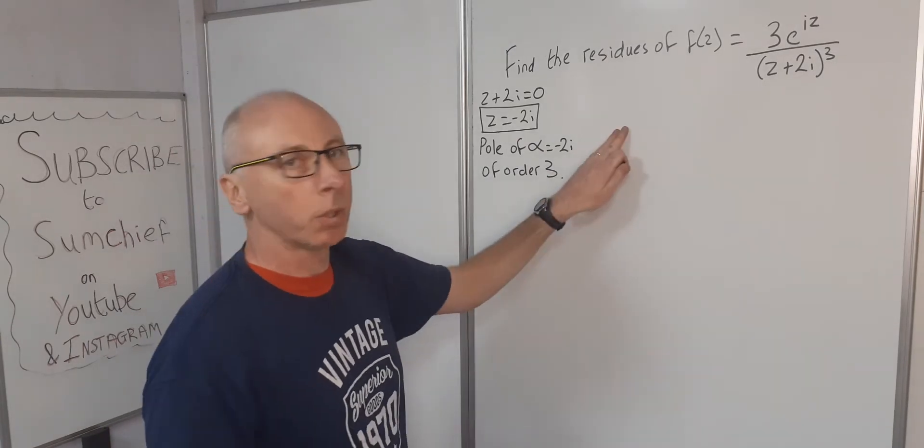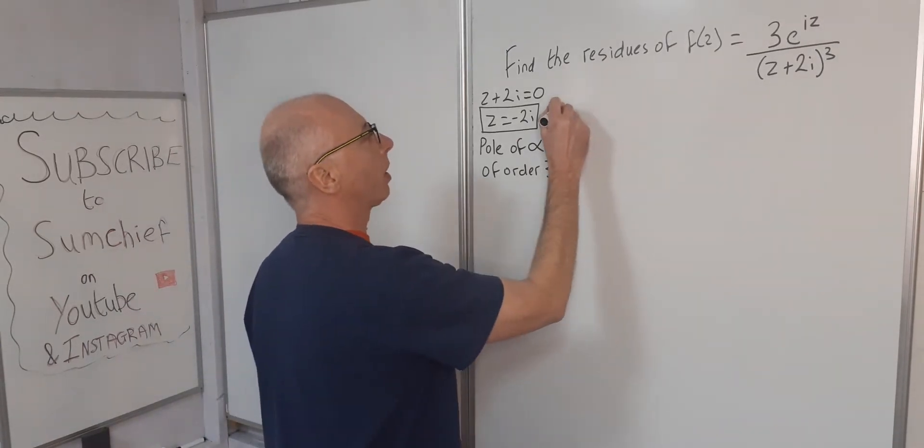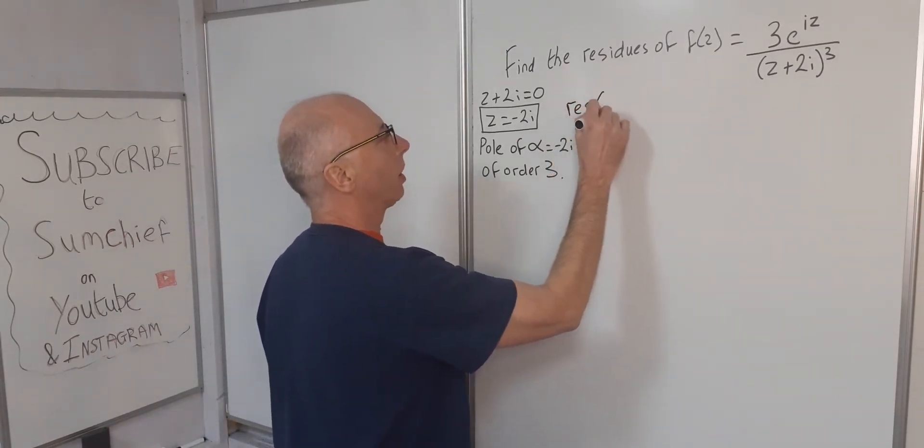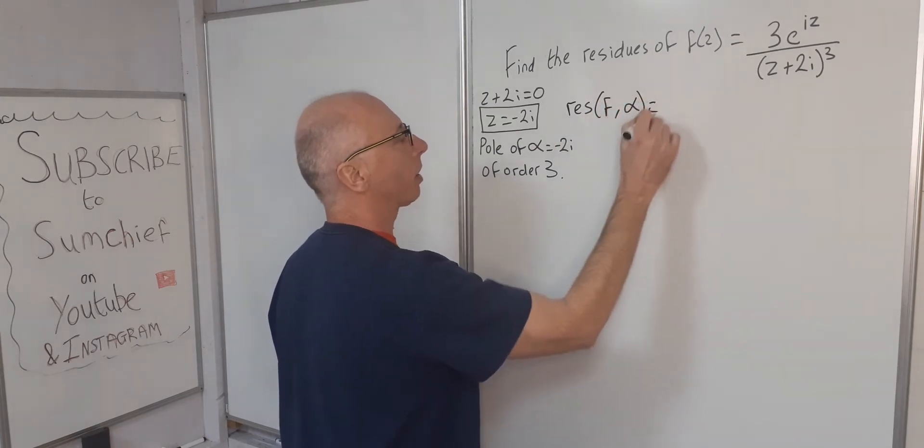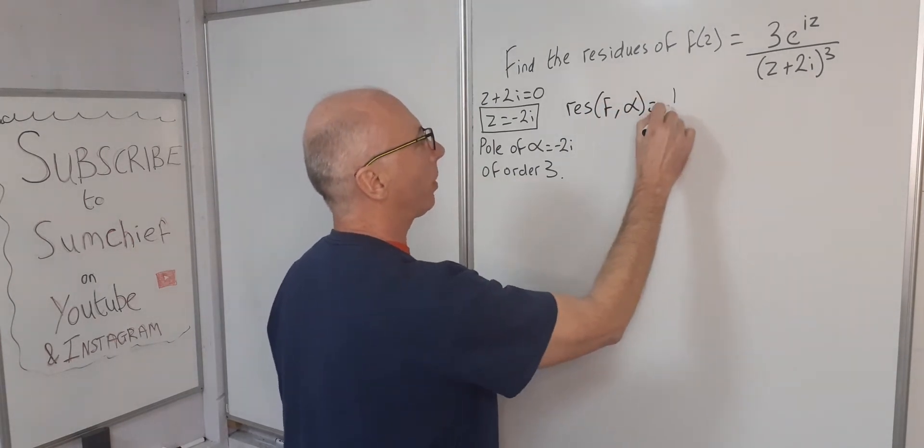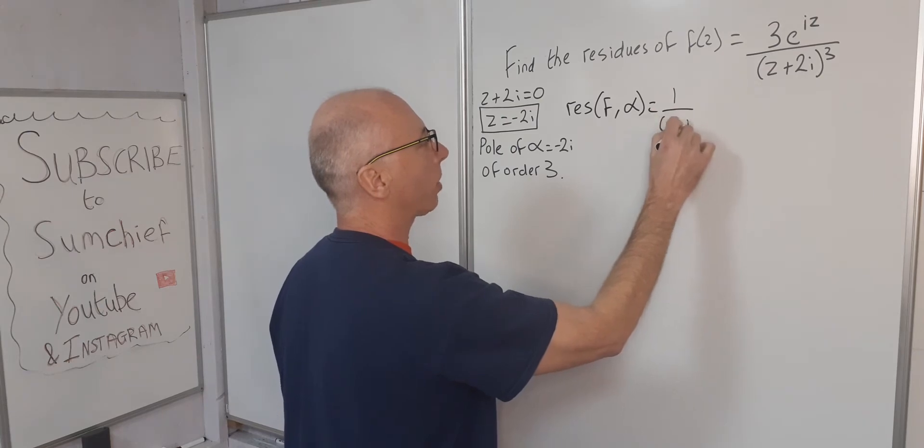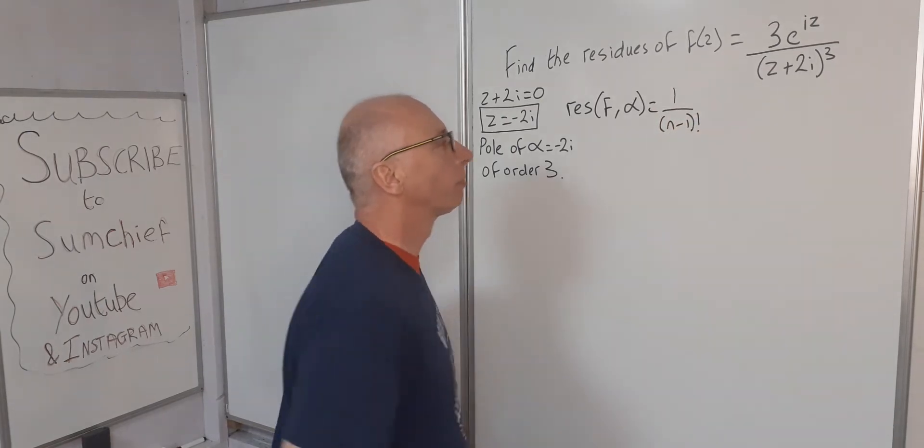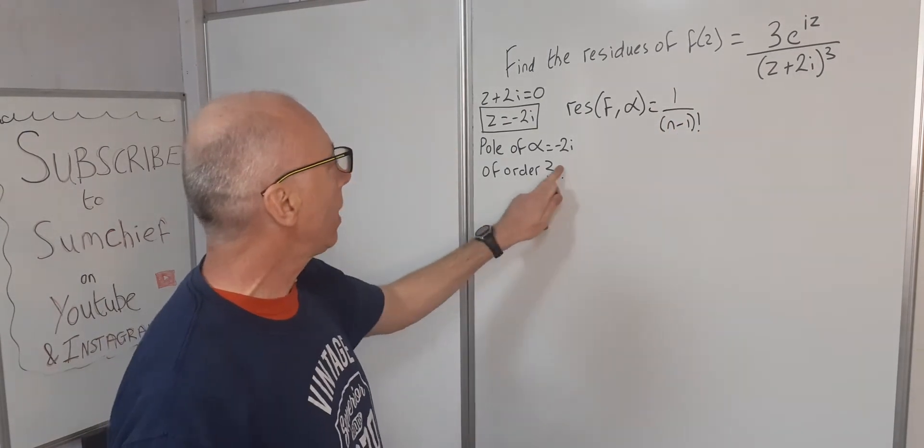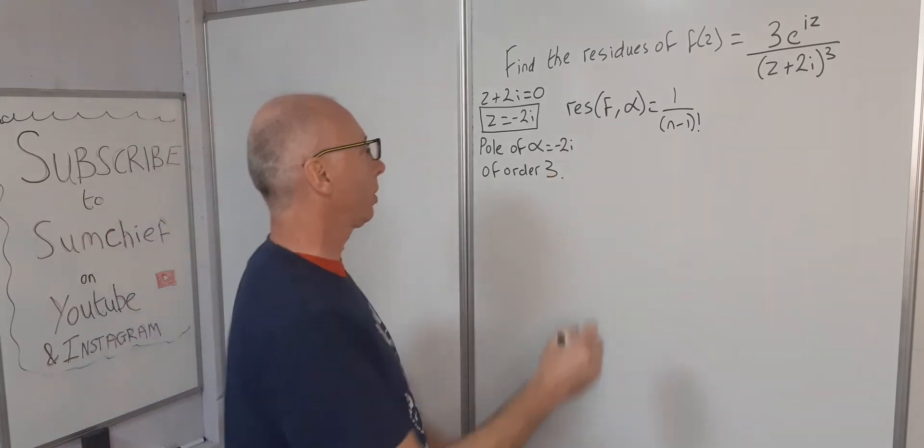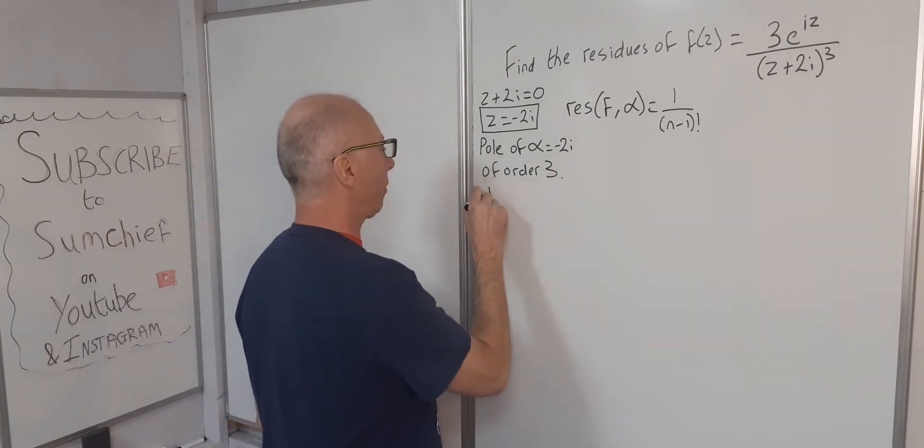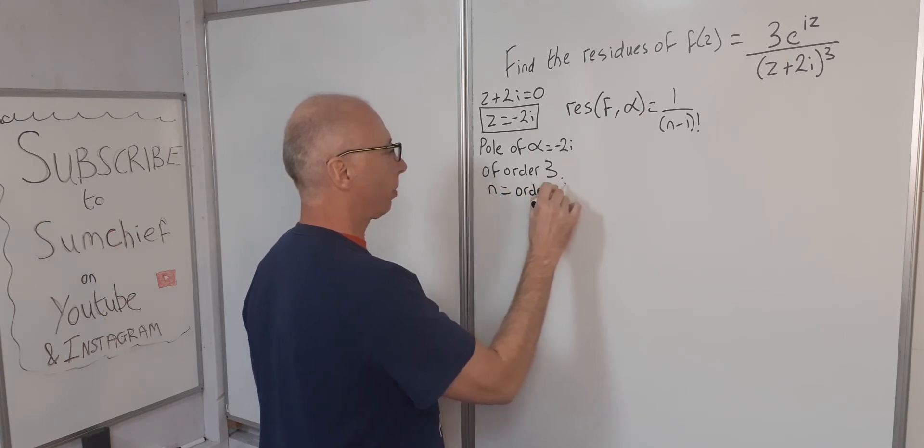So the formula we're going to use is: the residue of f at alpha equals 1 over (n-1) factorial, where n is the order of the function. So here we have n equals the order which equals 3.